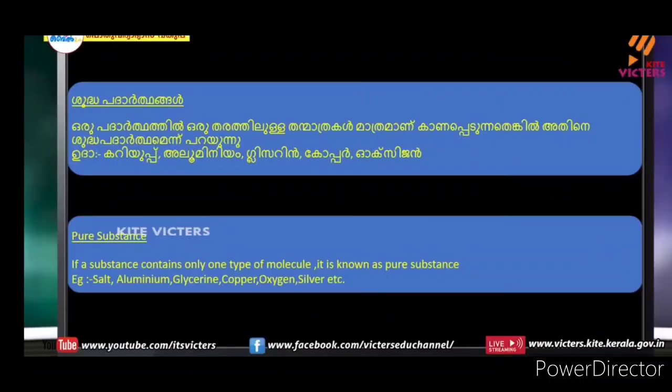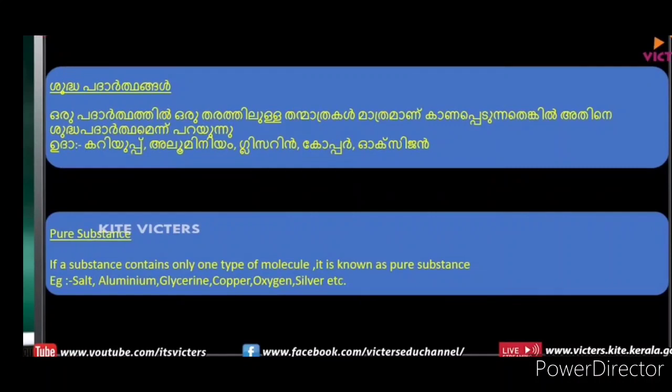If a substance contains only one type of molecules, it is called a pure substance. For example: salt, aluminum, glycerin, copper, etc.